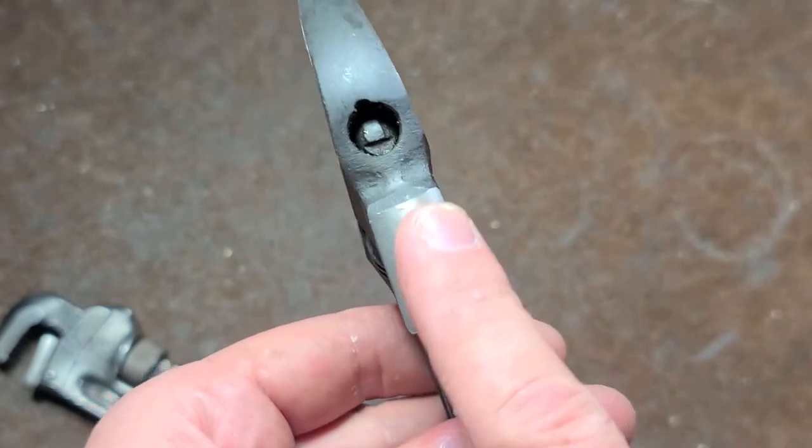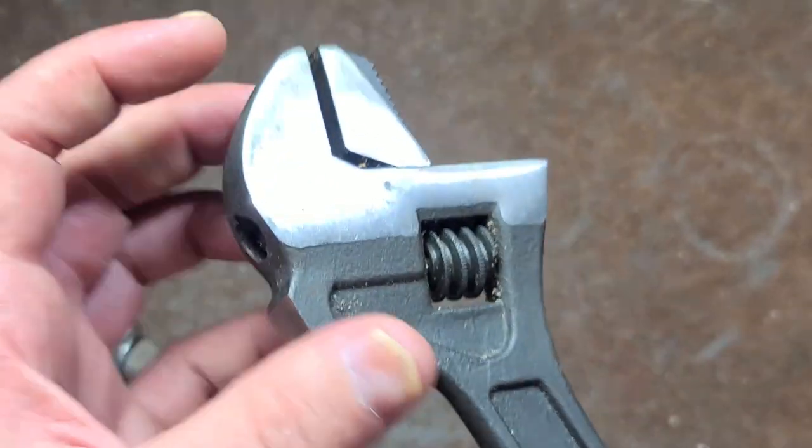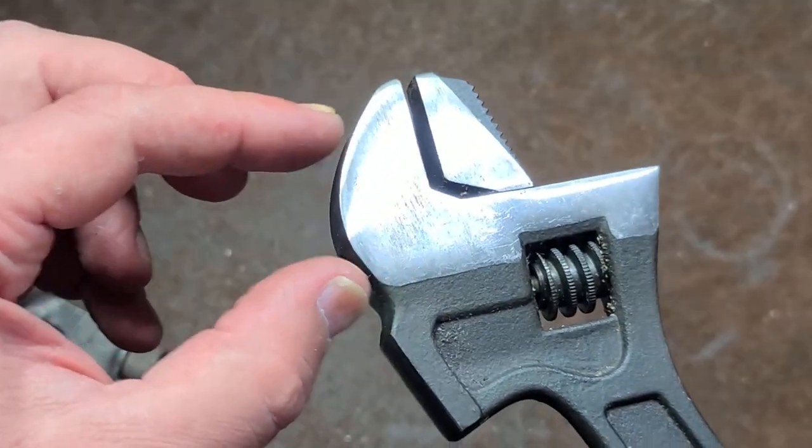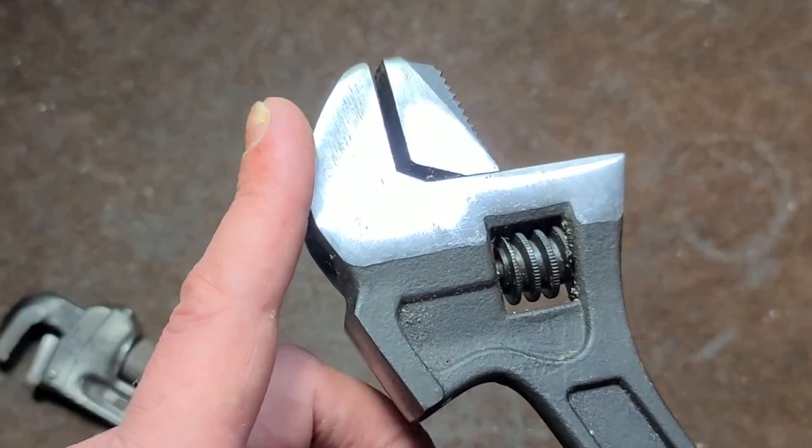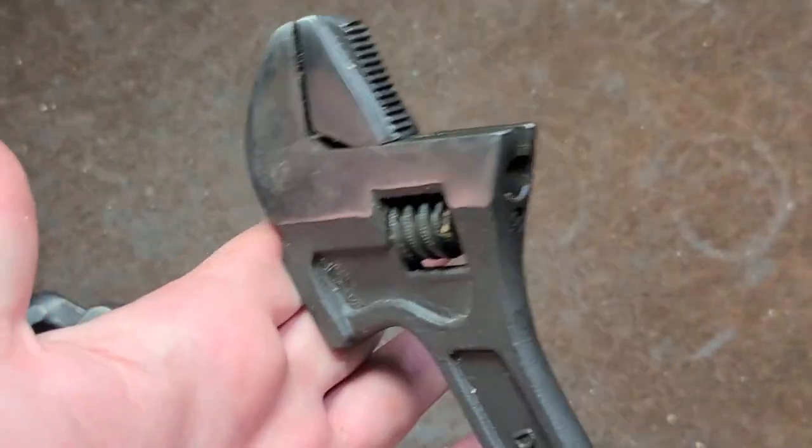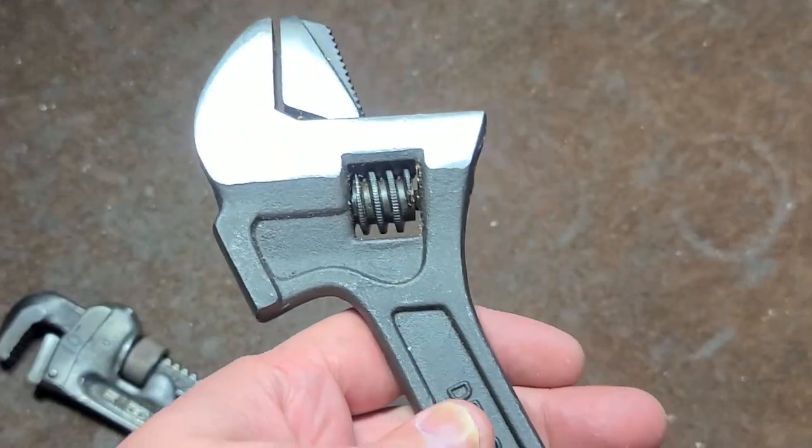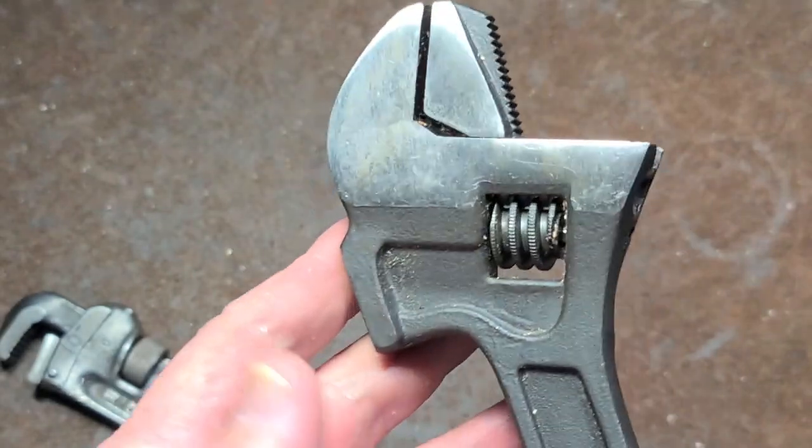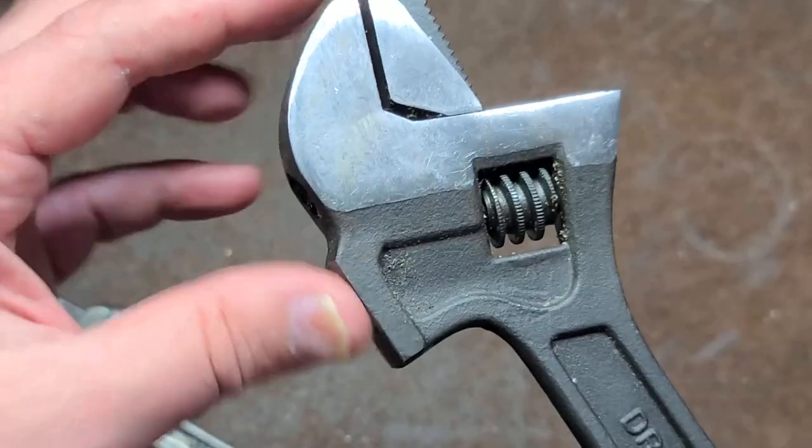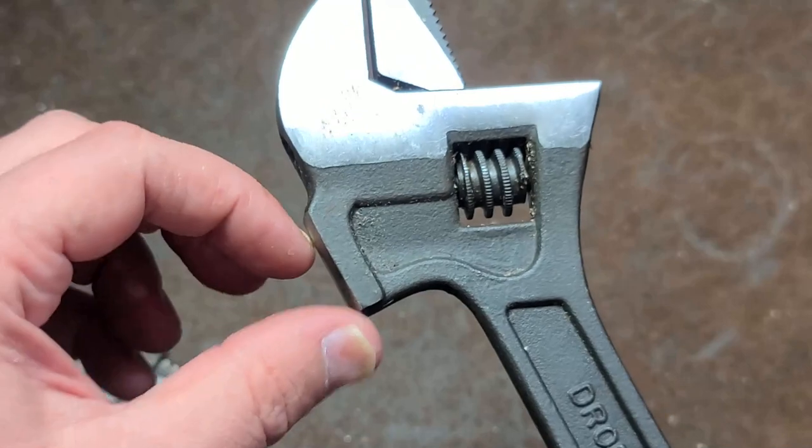Now, the other issue with the striking surface kind of being down here versus other models where it's more of a built up area up or higher on the wrench is of course, you're now striking down a little bit lower rather than further out. So you're just not able to get quite as much force. And obviously you can't get very close to anything because you have all this sticking out beyond the striking surface.